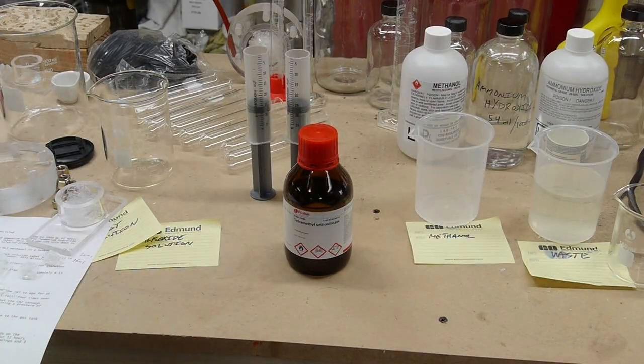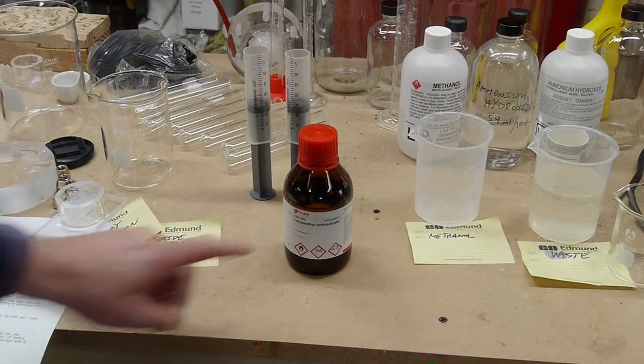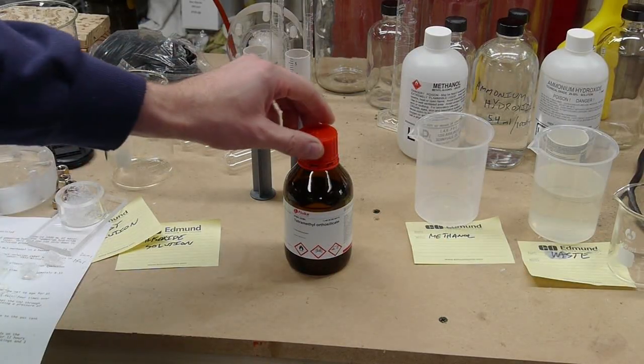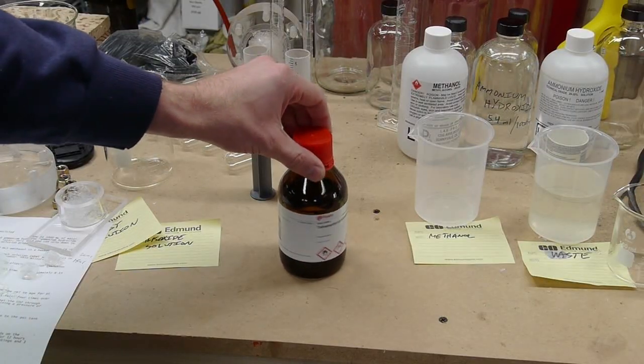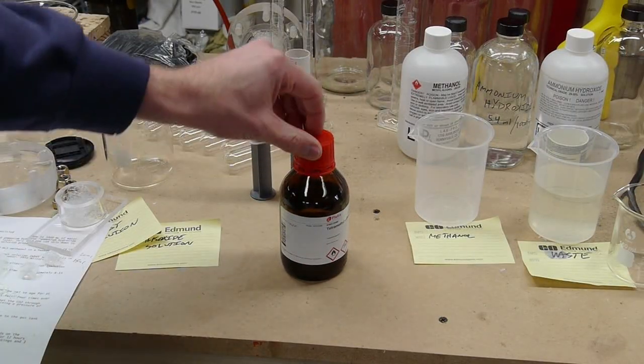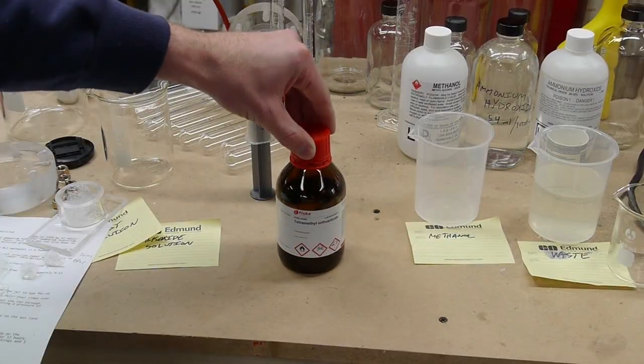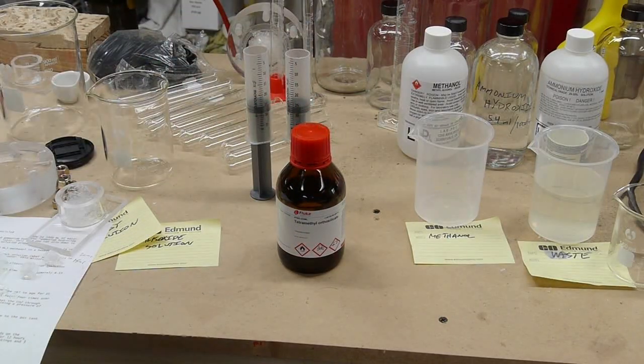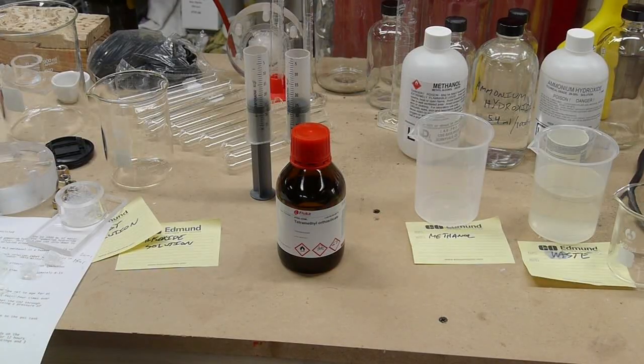I got my recipe for this aerogel off aerogel.org, and using tetramethyl is one method and using tetraethyl is another. But getting either of these chemicals is quite difficult. So if you're really interested in aerogel production and you happen to live close to me, maybe come by my shop and I might be able to share some of this since I have quite a bit. This is 250 milliliters of chemical, which is enough to make probably 20 batches of aerogel of the quantity that I just showed you.